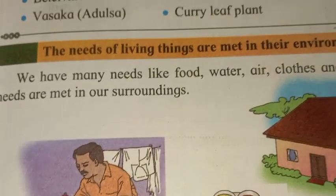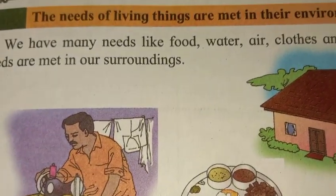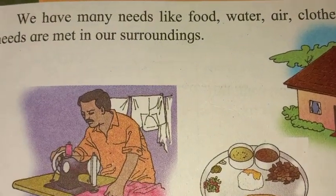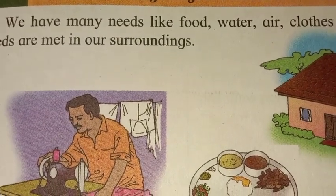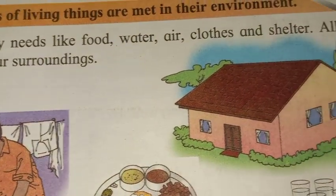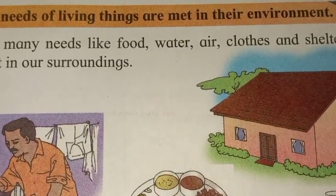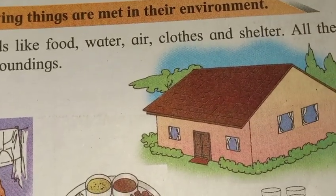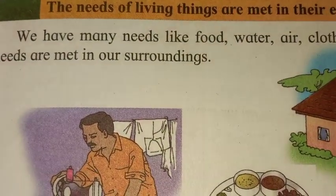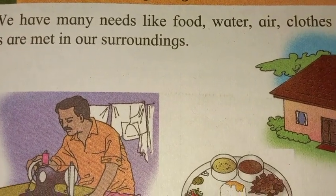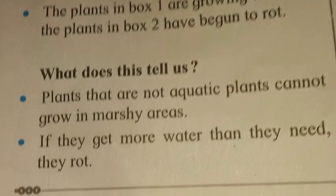The next one: the needs of living things are met in their environment. Yani ki hum log ke ek dusre ki help apne environment se mil jaati hai. For example, we have many needs like food, water, air, clothes, and shelter. Hum log ko kya chahiye — khana chahiye, peena chahiye, hawa chahiye, kapde pahanne ke chahiye, aur shelter chahiye. All these needs are met in our surrounding.